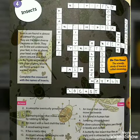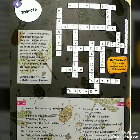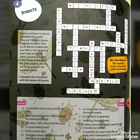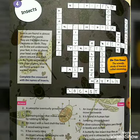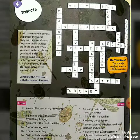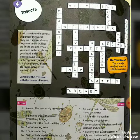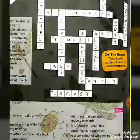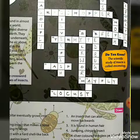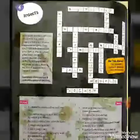Now fourth one, on the down side. A jumping, chirping insect — what is the name of that insect? Your answer is cricket. C-R-I-C-K-E-T. Cricket.